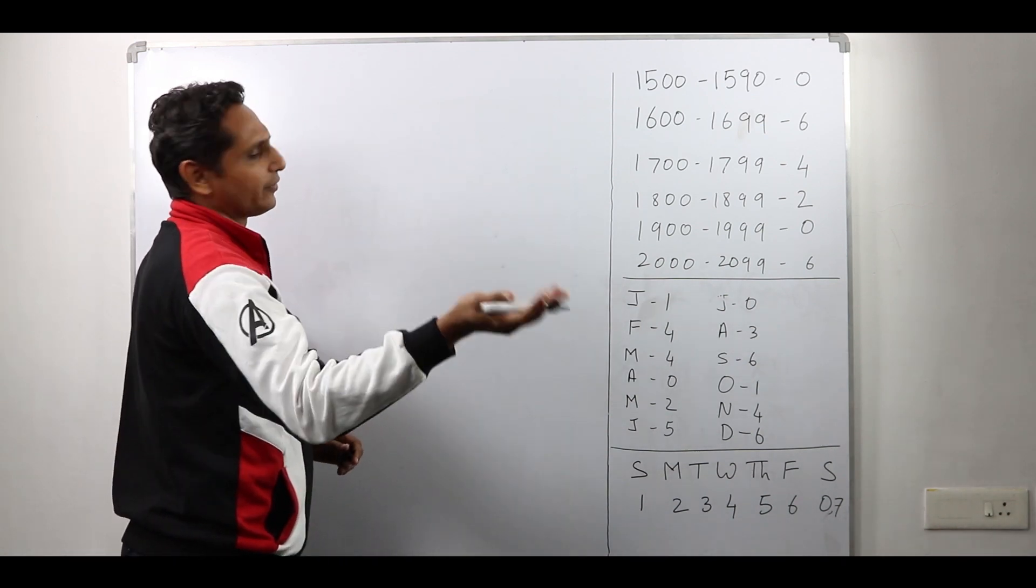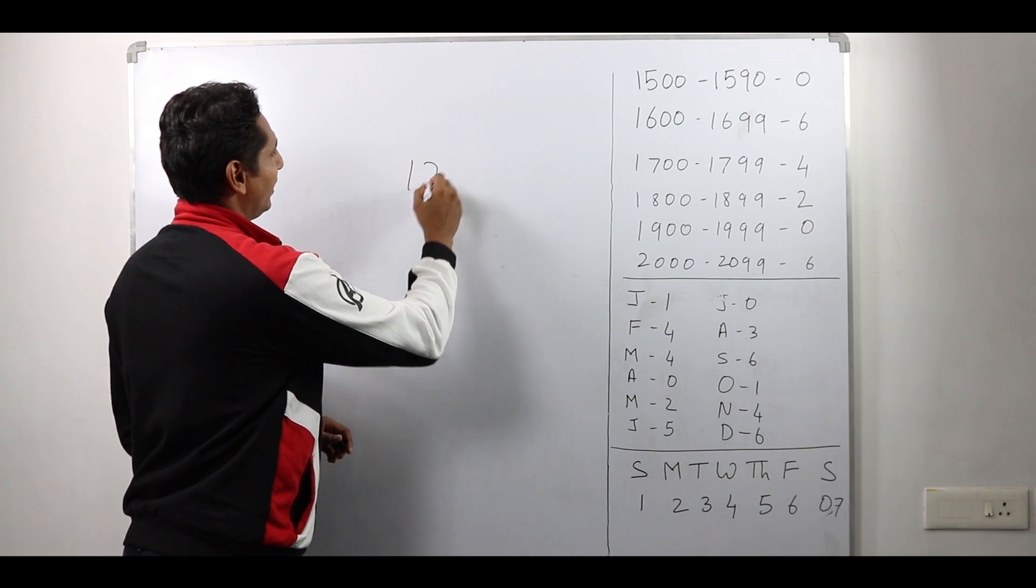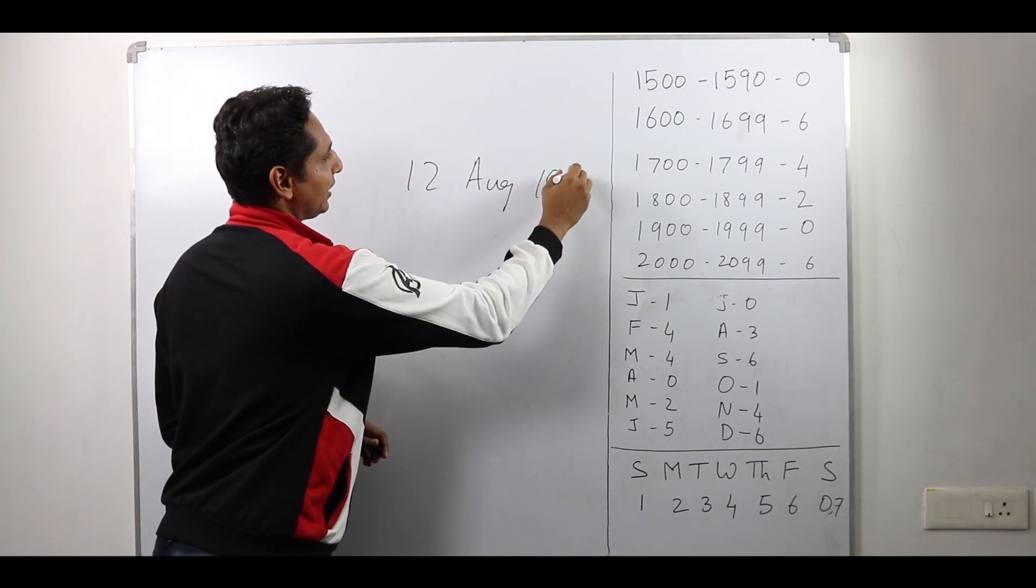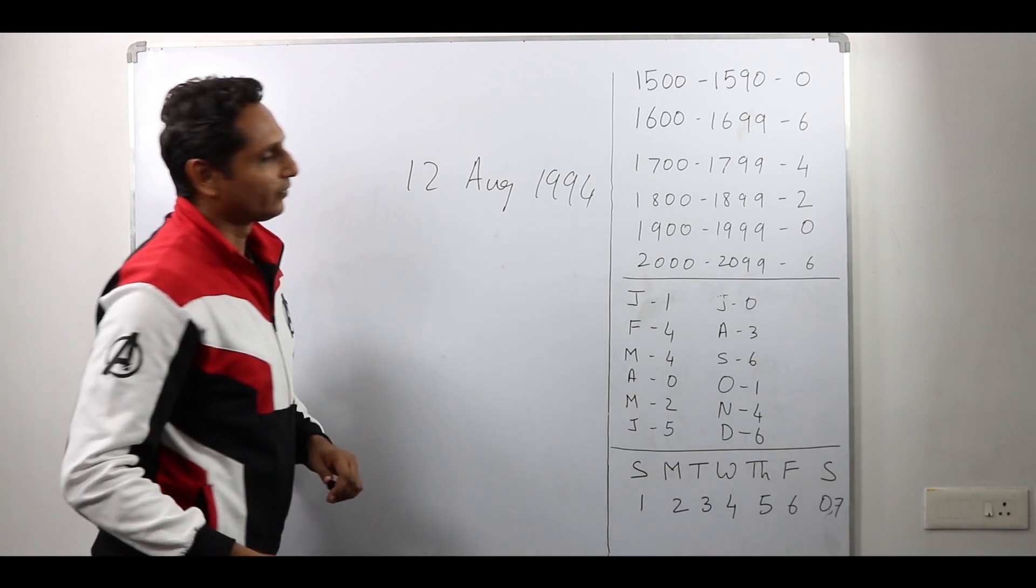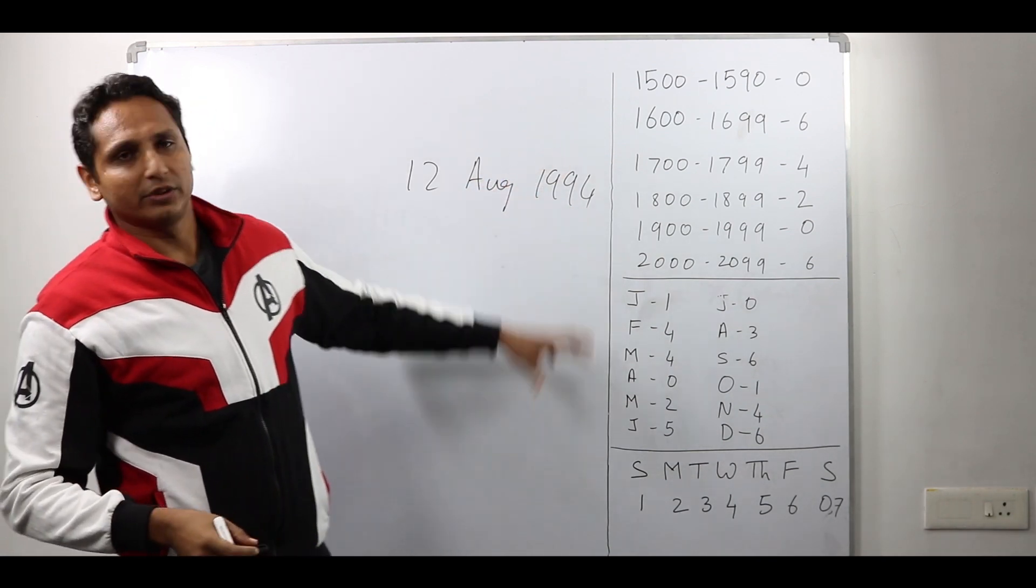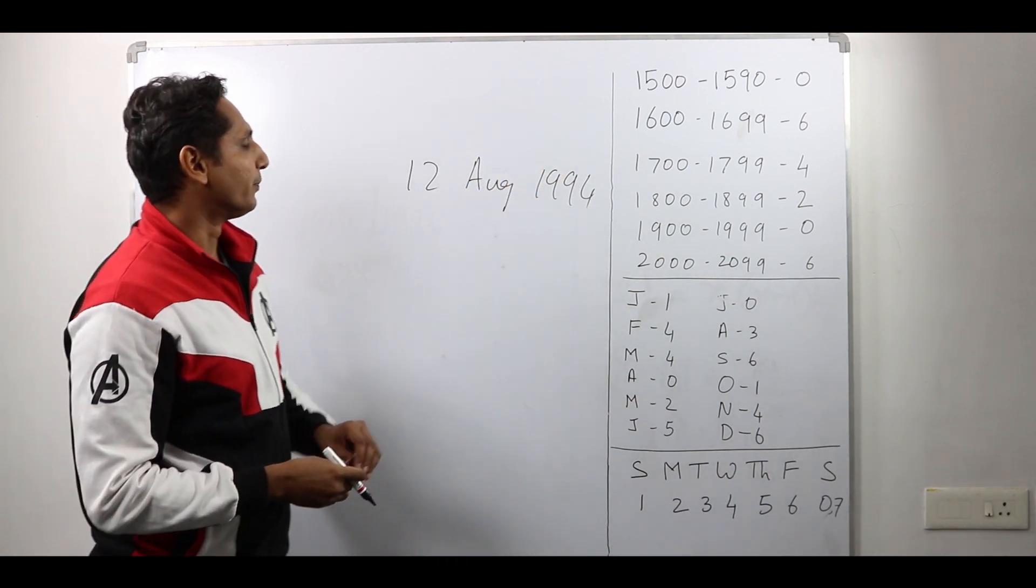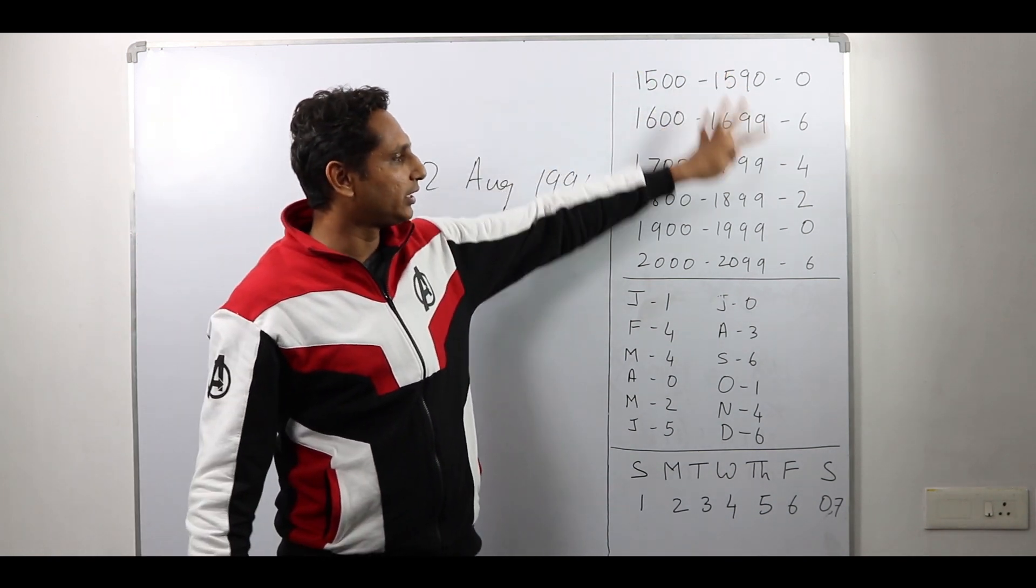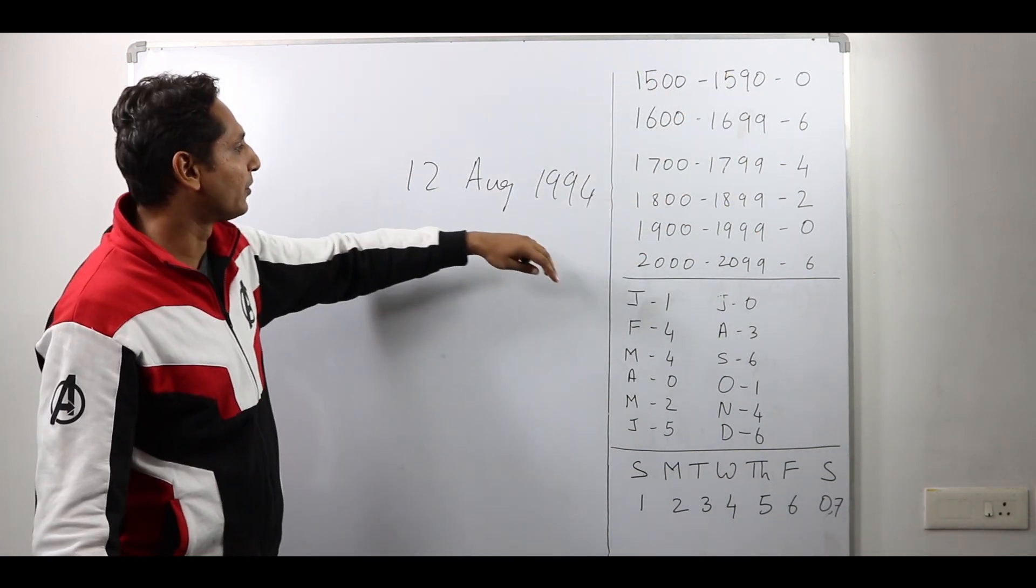Let's take this date for example which is 12-August-1994. Now I have some codes here. Let me explain these to you. This table is the code for the year, the century part.